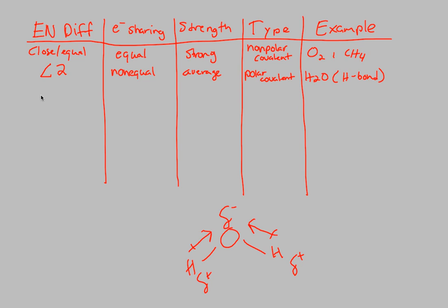The last one we want to talk about is, let's imagine that the difference is much greater than 2, or even much greater. This time, we're going to say we have very unequal sharing of electrons, very unequal. Somebody's winning much more than somebody else. And then we can also say that the strength is weak, and specifically I want to say it's weak in H2O. And we'll see why in just a minute. The type now is going to be ionic. This is an ionic bond. And we know that an ionic bond could be represented by something like NaCl, sodium chloride, table salt.